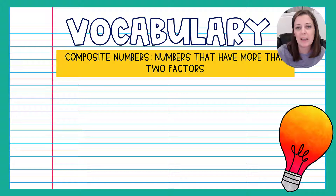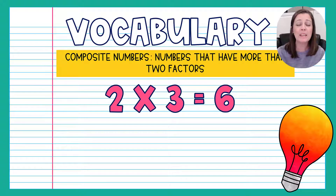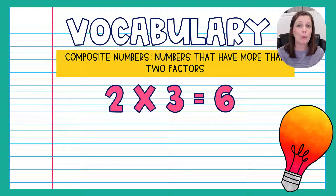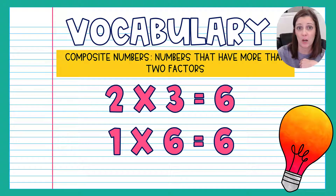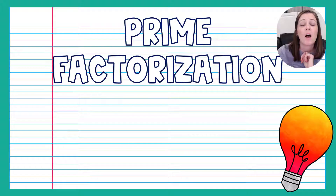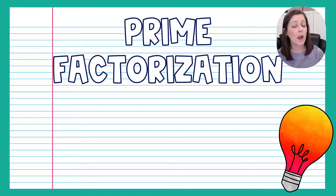Let's look at an example of a composite number. We said two and three were both factors of six. Six is a composite number because two times three is not the only way to get six — we could also do one times six. There are four factors total, meaning it's a composite number because there are more than two. So we know what factors are, we know what prime numbers are, and we know what composite numbers are.